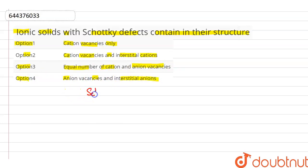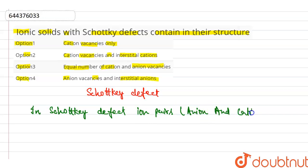So now discuss the Schottky defect. In Schottky defect, ion pairs, that is anion and cation both move out from the solid lattice.